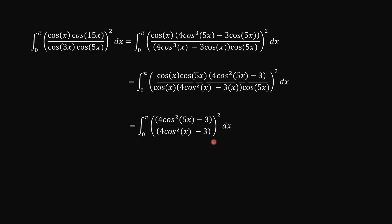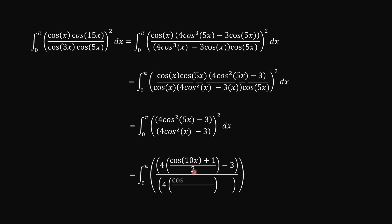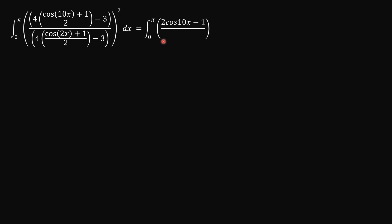To simplify further, we use the double angle formula: cosine²5x becomes (cosine 10x + 1)/2, and cosine²x becomes (cosine 2x + 1)/2. Dividing 4 by 2 gives 2 in each case, so the expression simplifies to (2 cosine 10x − 1) over (2 cosine 2x − 1), all squared.